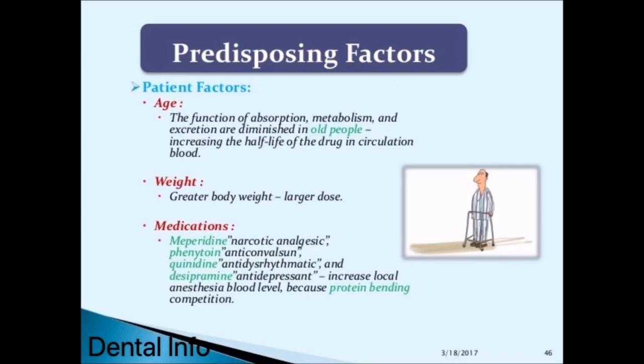Age: functions of absorption, metabolism, and excretion are diminished in older people, increasing the half-life of the drug in circulation. Weight: greater body weight requires a larger dose. Medications such as meperidine (narcotic analgesic), phenytoin (anticonvulsant), quinidine (antidysrhythmic), and desipramine (antidepressant) increase local anesthesia blood levels due to protein binding competition.